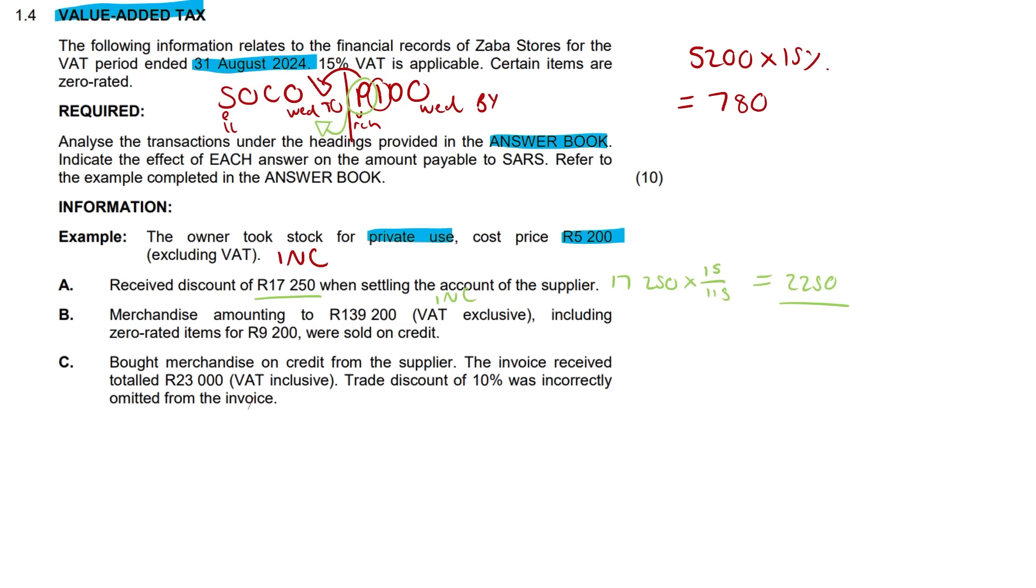Next, merchandise amounting to R139,200, this is a VAT exclusive amount including zero rated items for R9,200 that was sold on credit. So 139,200 minus this 9,200 gives us 130,000. That's going to be our VAT exclusive amount. Just multiply that by 15% to get the VAT amount and you get R19,500. So this was sold on credit. We are making a sale here. So that's just going to be owed to SARS. So again, this is going to increase. So we've had like three increase questions already, including that example. Surely the next one is a decrease. And yeah, you can see it here.